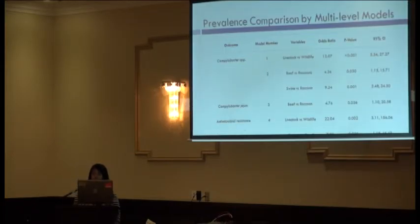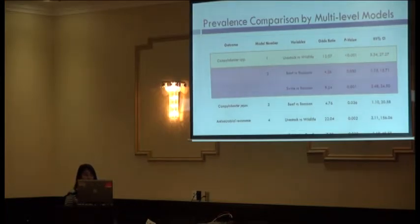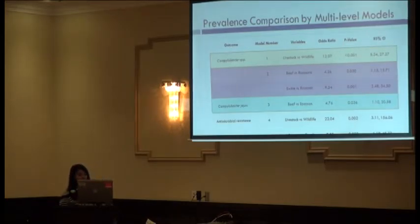Our multi-level models, accounting for farm location, found several interesting outcomes. Livestock exhibited significantly higher odds of Campylobacter species shedding than wildlife. Beef and swine had significantly higher odds of shedding Campylobacter when compared to raccoons, consistent with our previous model. In our third model, beef were significantly more likely to shed Campylobacter jejuni than raccoons. Swine were eliminated from this model because they only shed C. coli.